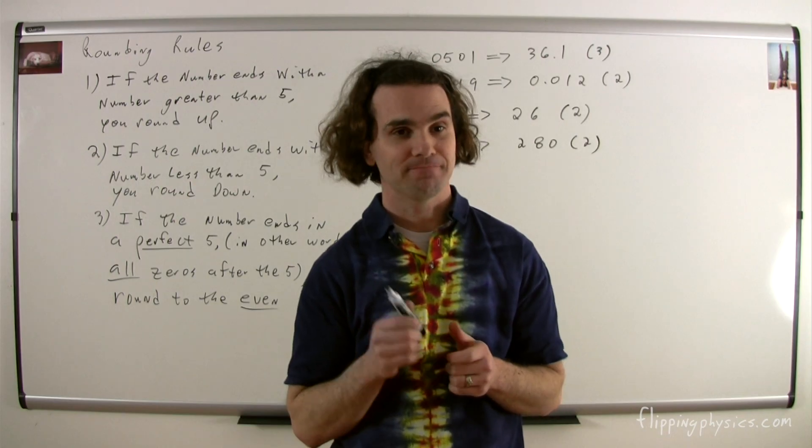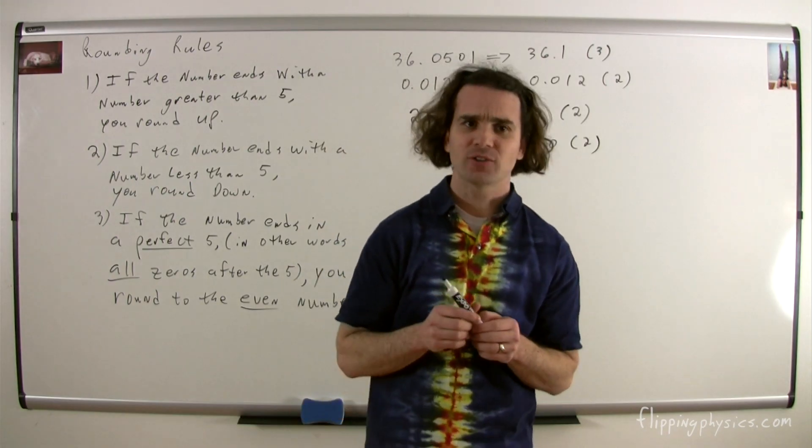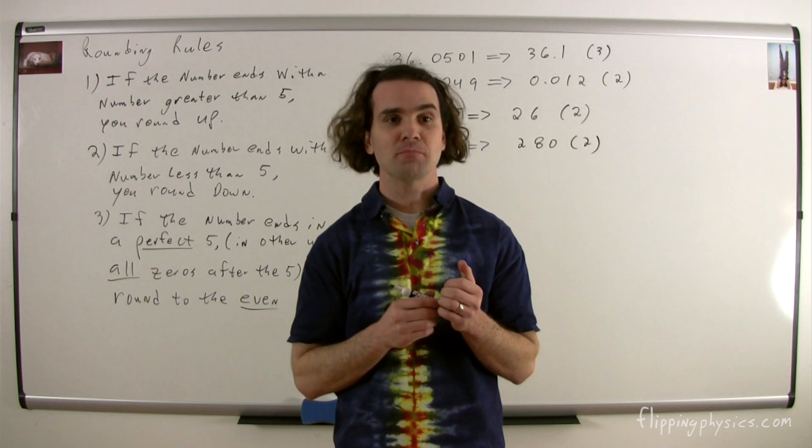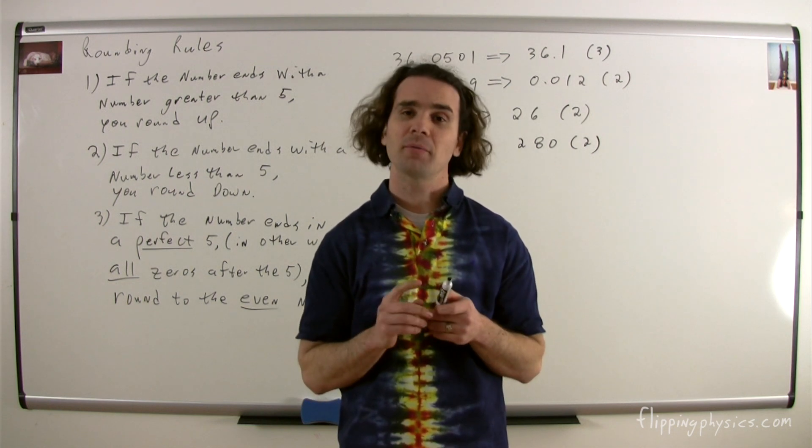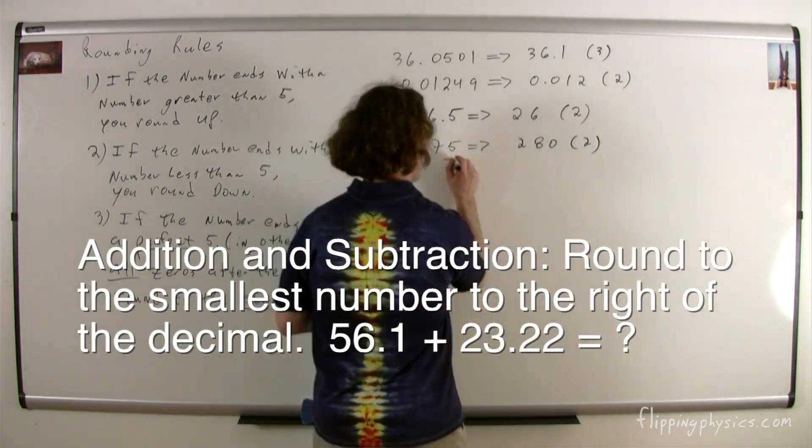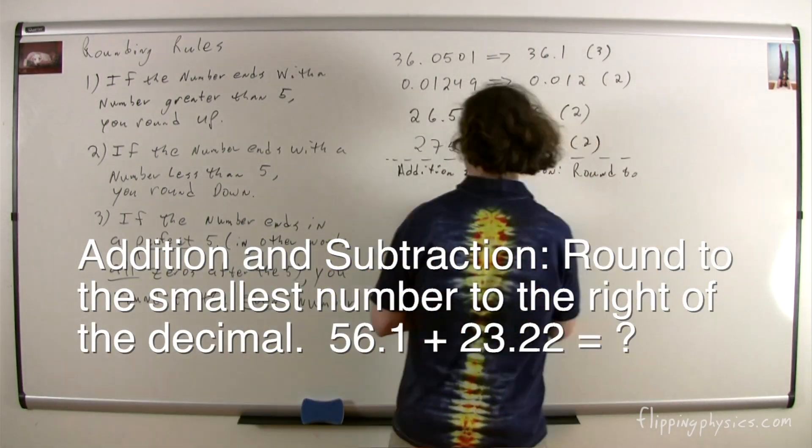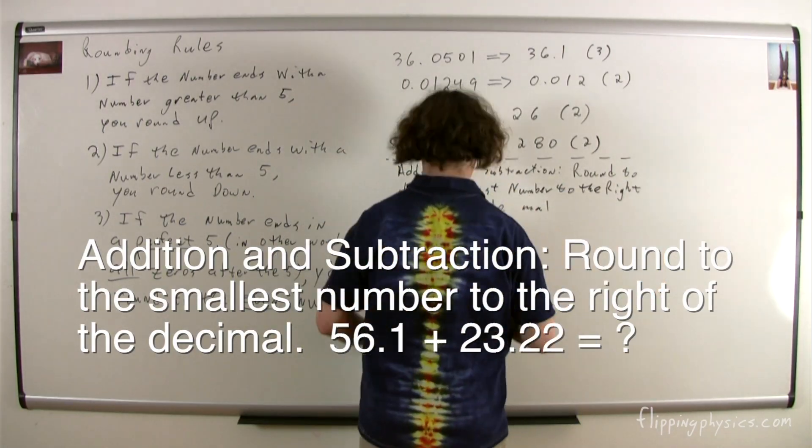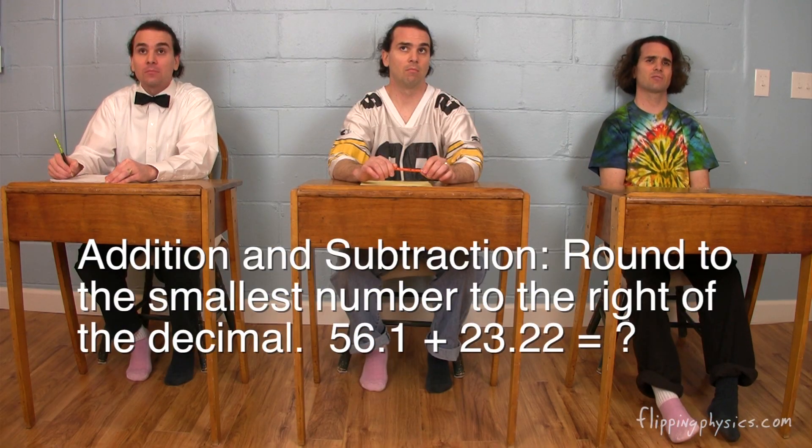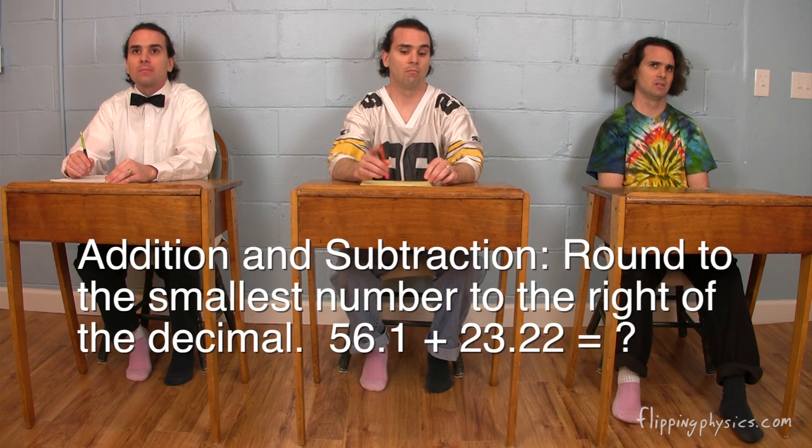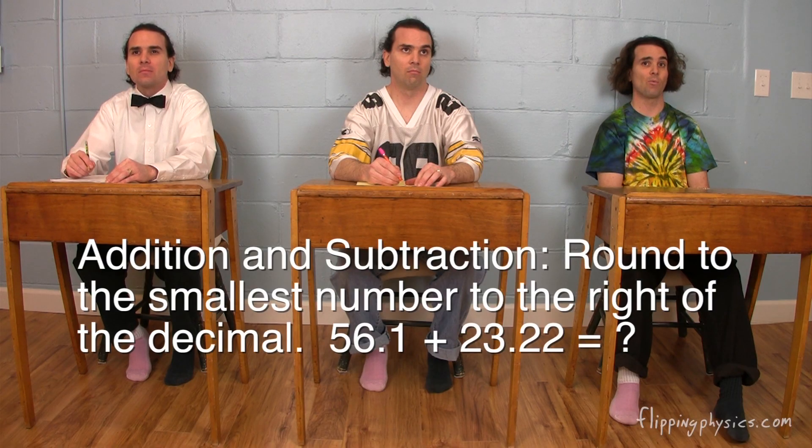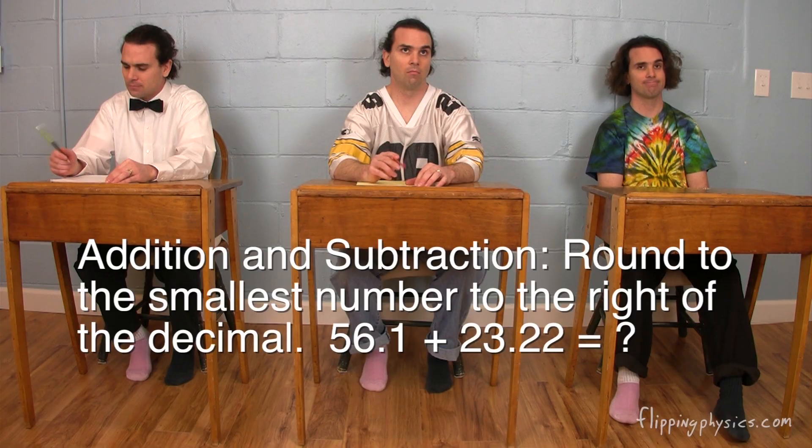Okay, moving on. You should know that when you add or subtract numbers, you round to the smallest number to the right of the decimal. In other words, Bo, what is 56.1 plus 23.22? 56.1 plus 23.22 is 79.32. However, the smallest number to the right of the decimal was 56.1, and therefore we round to one number to the right of the decimal, or 79.3. Yes.